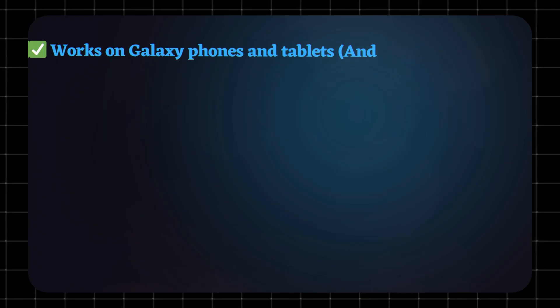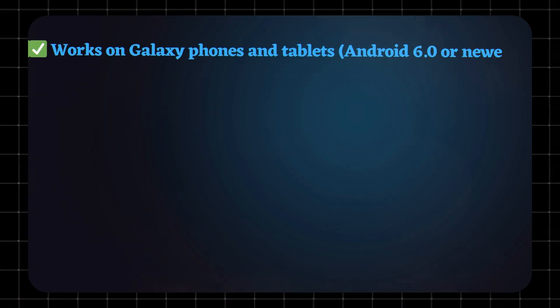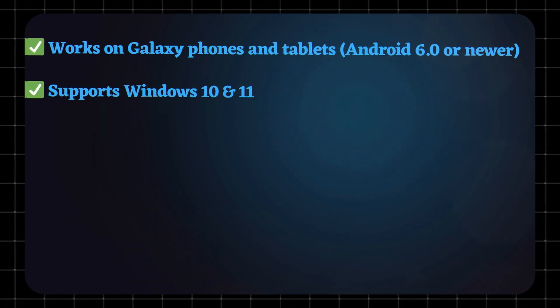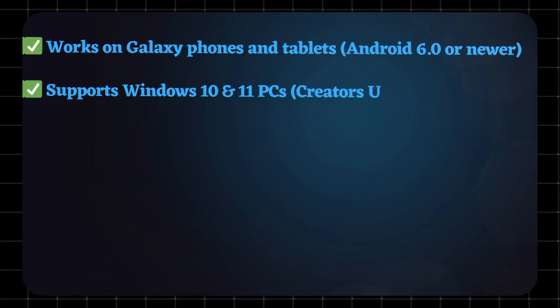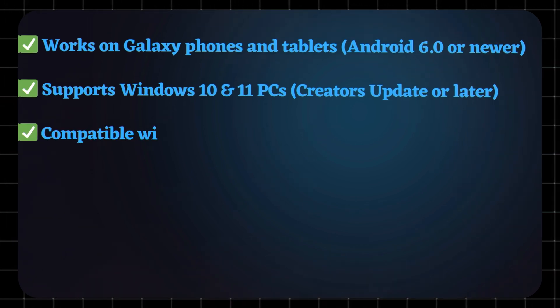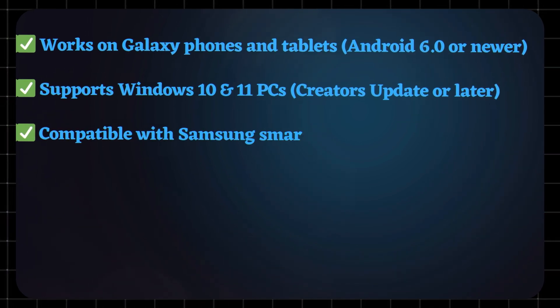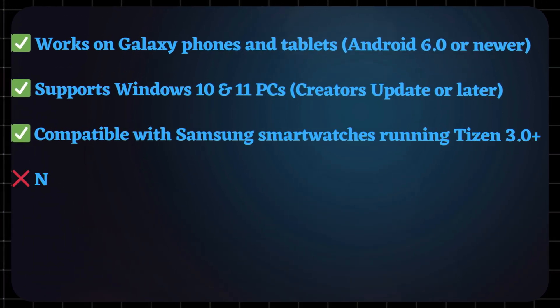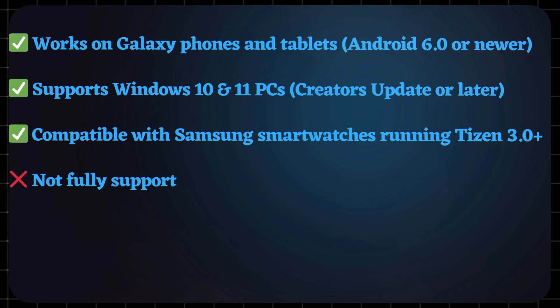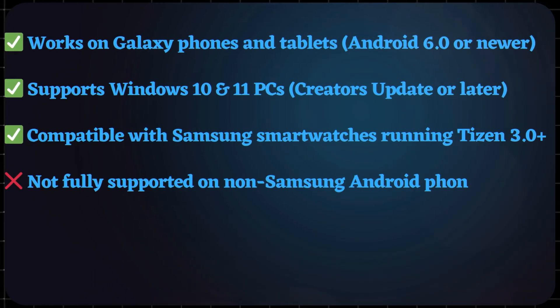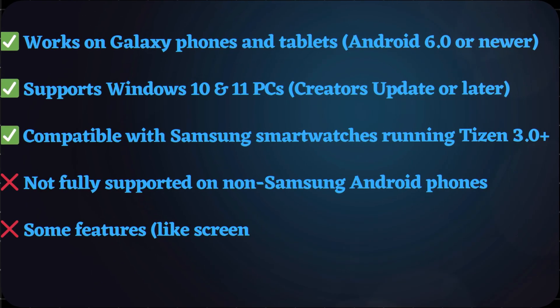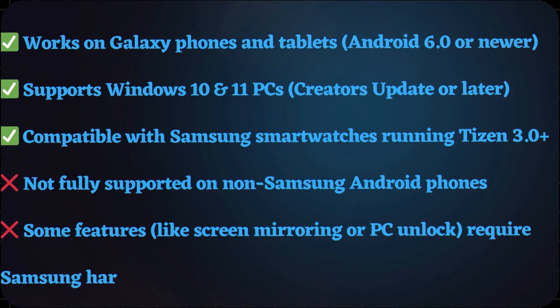Samsung Flow works on Galaxy phones and tablets running Android 6.0 or newer. It supports Windows 10 and 11 PCs with the Creators Update or later, and is compatible with Samsung smartwatches running Tizen 3.0 and above. It's not fully supported on non-Samsung Android phones, and some features like screen mirroring or PC unlock require Samsung hardware.